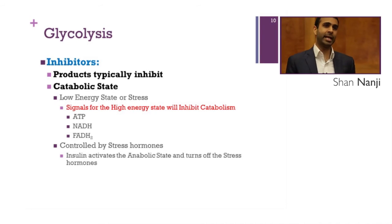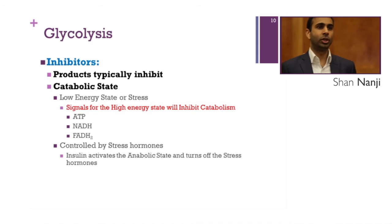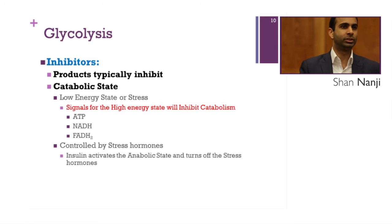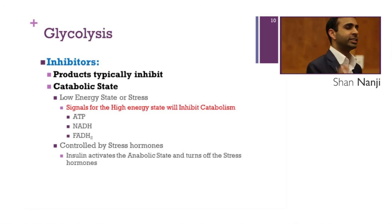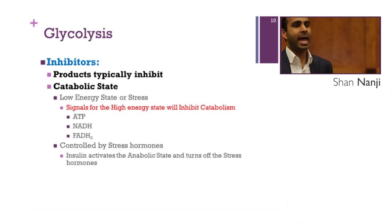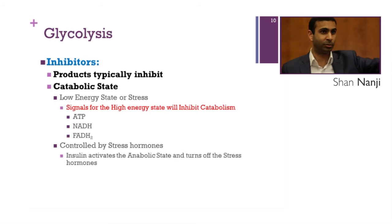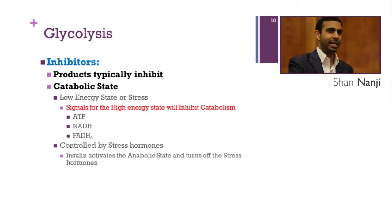Now we'll cover inhibitors for the catabolic state. Since products typically inhibit, signals of a high energy state will inhibit catabolism. These inhibitors are the same as the activators for the anabolic state: ATP, NADH, and FADH2. Insulin also inhibits catabolism by activating the anabolic state and turning off the stress hormones.